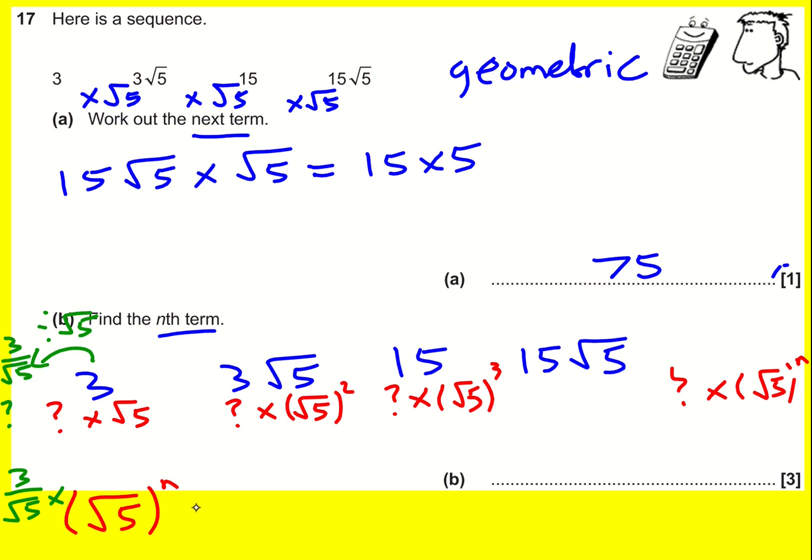I could write that in there. I'd probably get two marks for that because I can cancel it down, because I could write it as 3 times root 5 to the n divided by root 5.